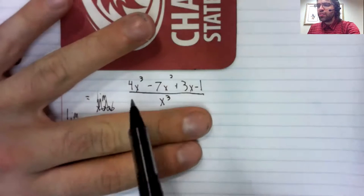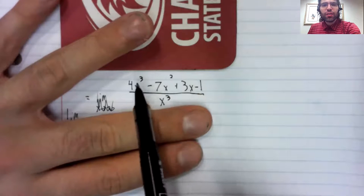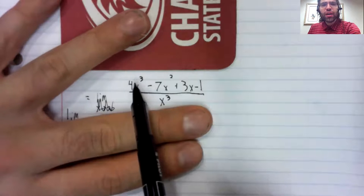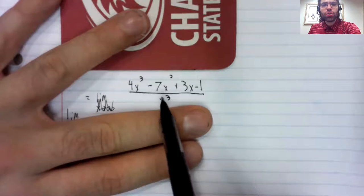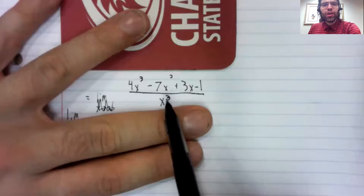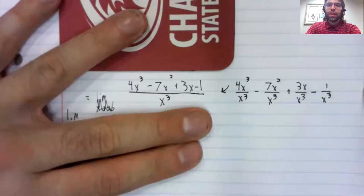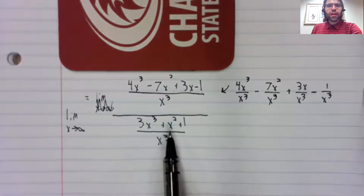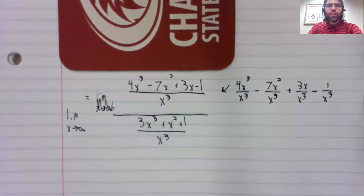Now when you look at this, we can break this up. When we have a fraction like this, addition and subtraction up here, a single term down here, that breaks up. And this fraction down here also breaks up. So this limit becomes...